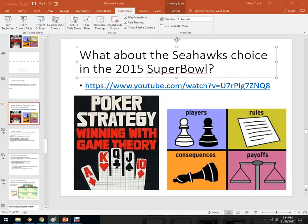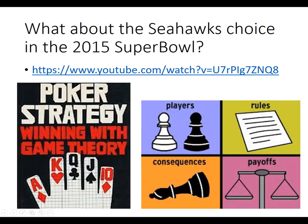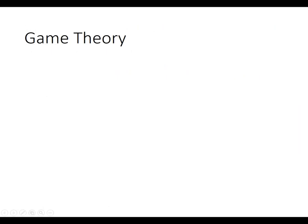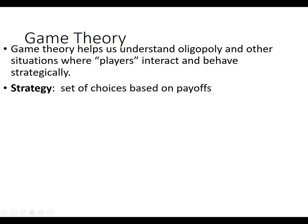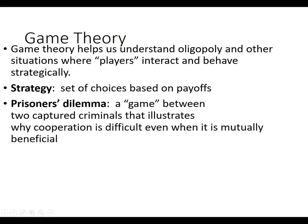So that's a pretty good example from the sports world. Game theory — here are some definitions. We use this in some sort of strategic environment, usually in oligopoly, but you can think about it between yourself and your boss. There's a version called the battle of the sexes. Everybody has a strategy, which is a set of choices based on the payoffs and benefits of doing things. And then there's usually a game called a prisoner's dilemma, which we'll go through.